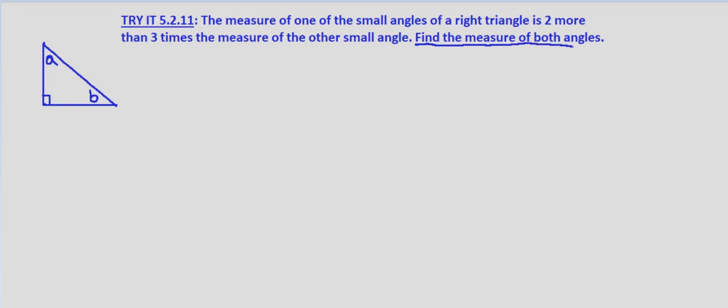This is what we're looking for: the measure of both angles. With a geometric problem, the first thing we should always do is try to draw a picture of the situation. So I drew a right triangle and labeled the two small angles A and B.